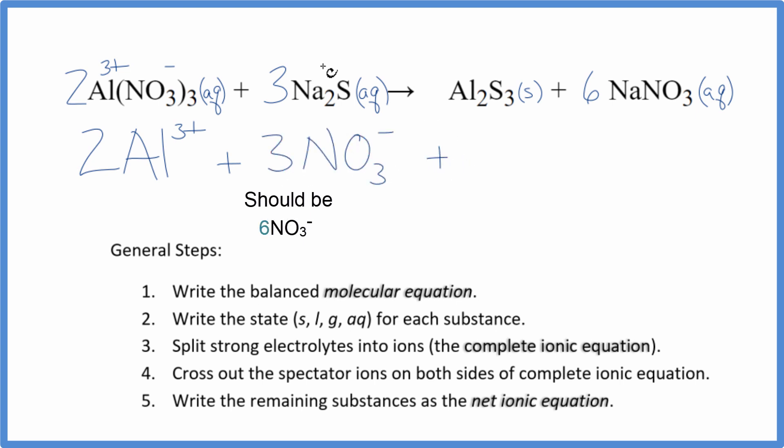And then sodium, that's in group 1, that'll have a 1+. The sulfide ion is 2-. 2 times 3, that gives us 6 sodium ions. And then we have the sulfide ion. Actually, we have 3 sulfide ions. And these are the reactants in our net ionic equation.